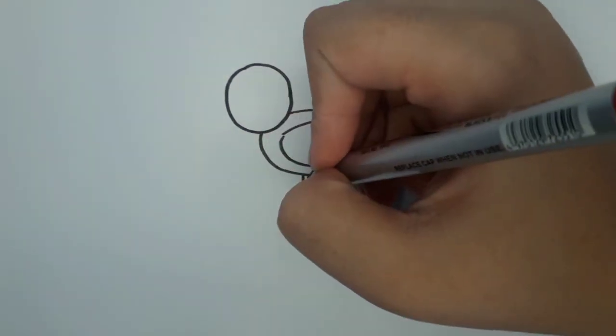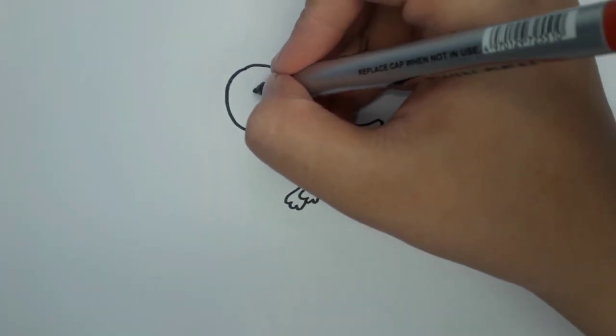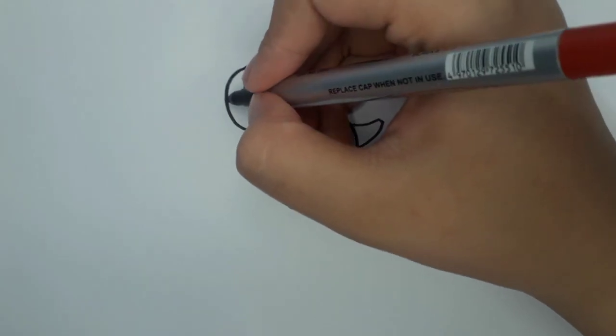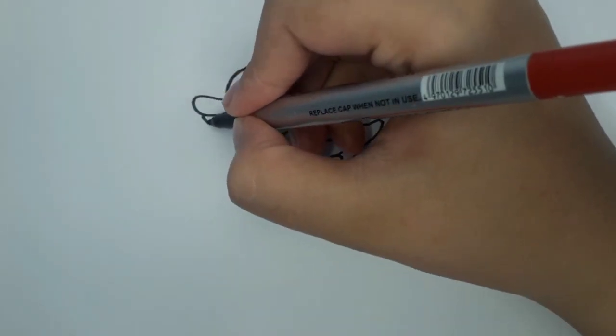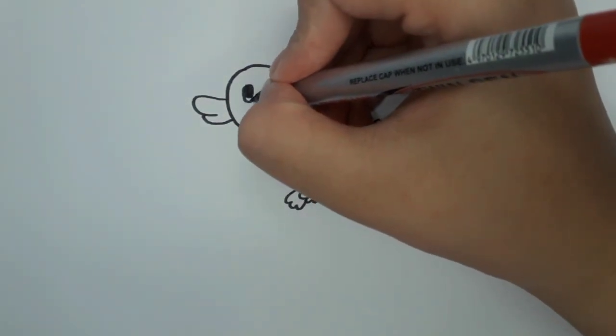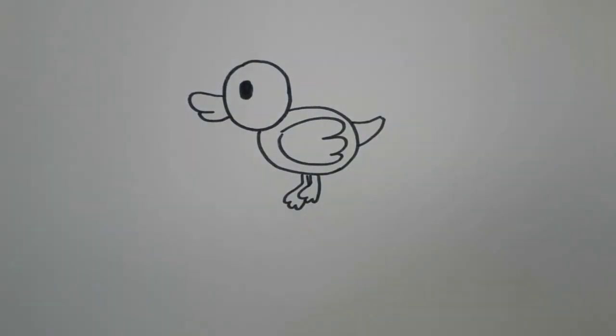Don't forget the wings to help it splash around. Step 2, adding fluffy details. Time to make it cuddly. Sketch those webbed feet, cute little eyes, and don't forget the fluff. Add some feathers, just a few squiggles will do, maybe even a splash of water droplets.